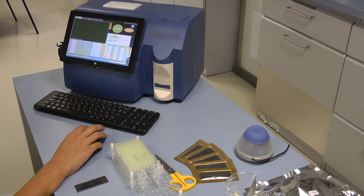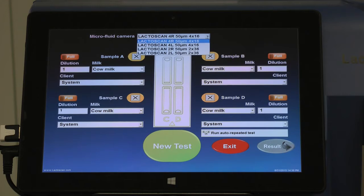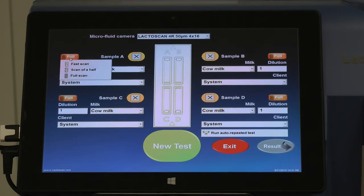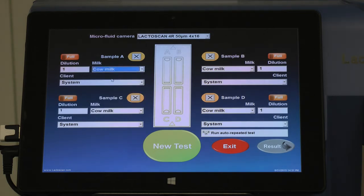Press Start on the main screen, then choose the type of chip from the drop-down menu. Choose the type of milk from the drop-down menu.